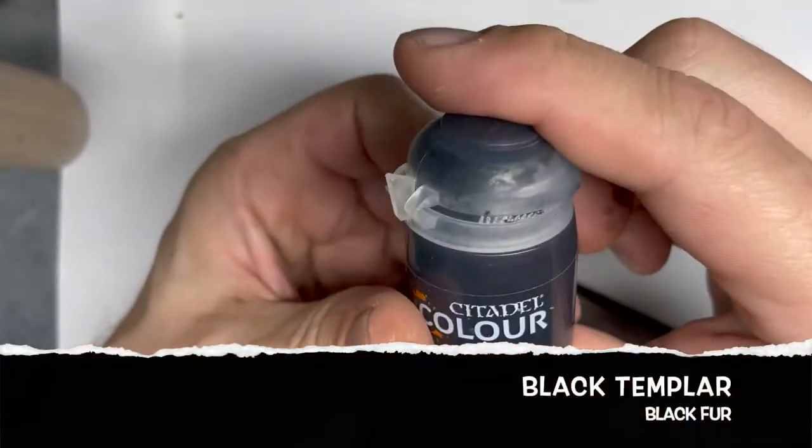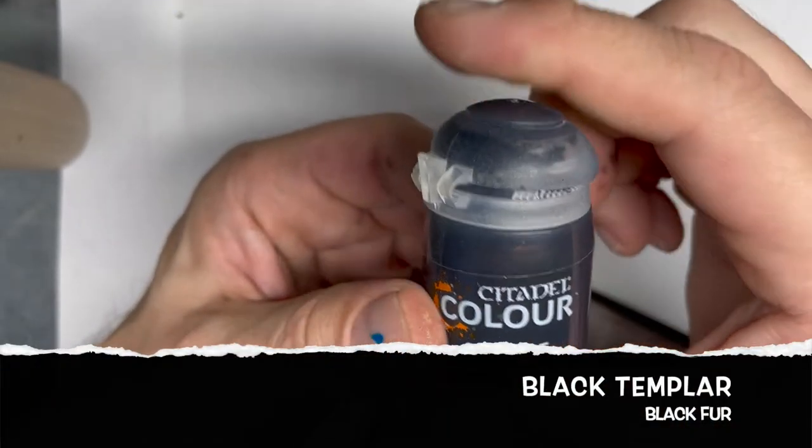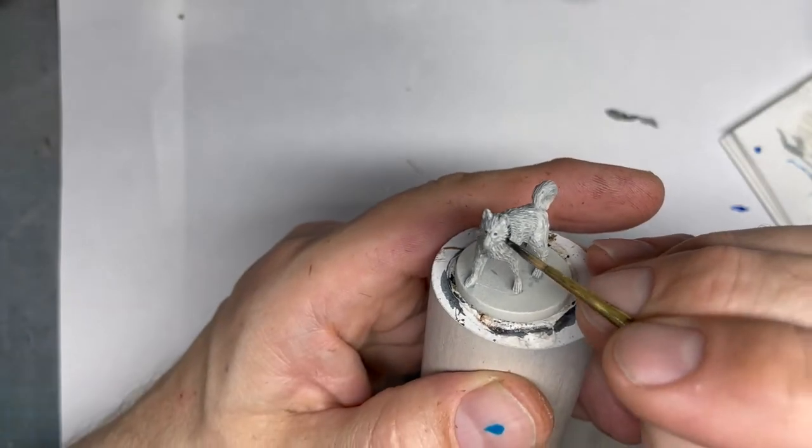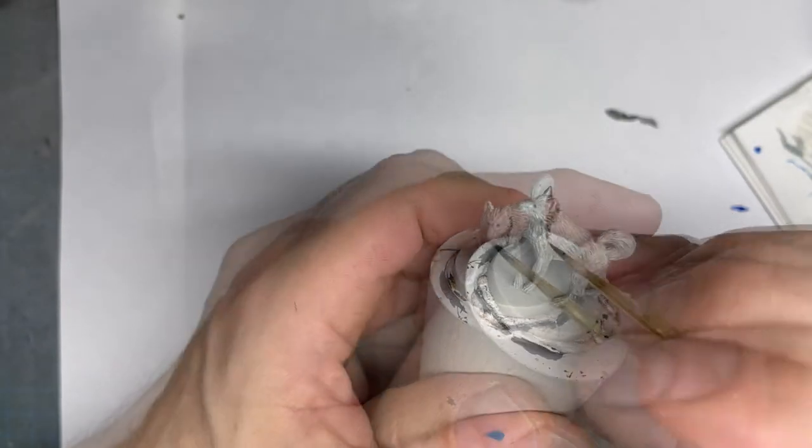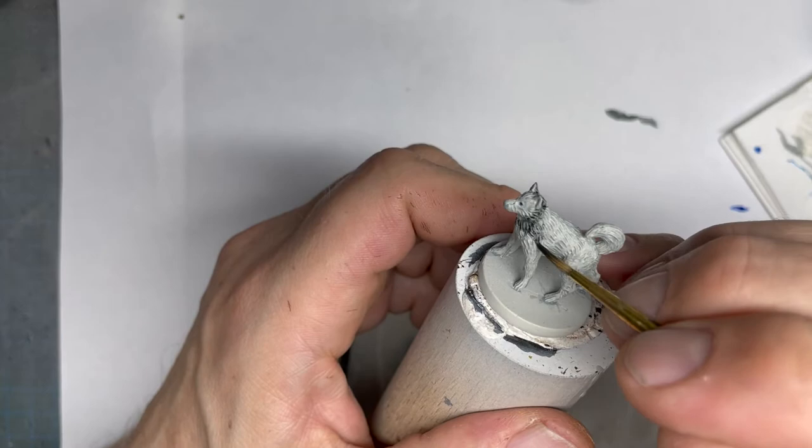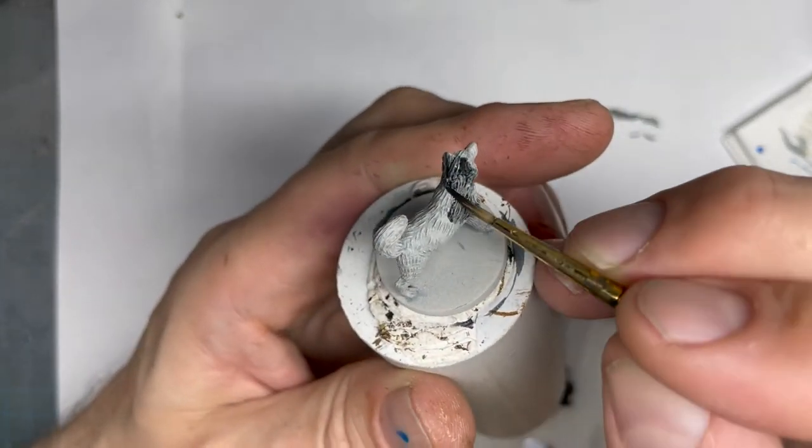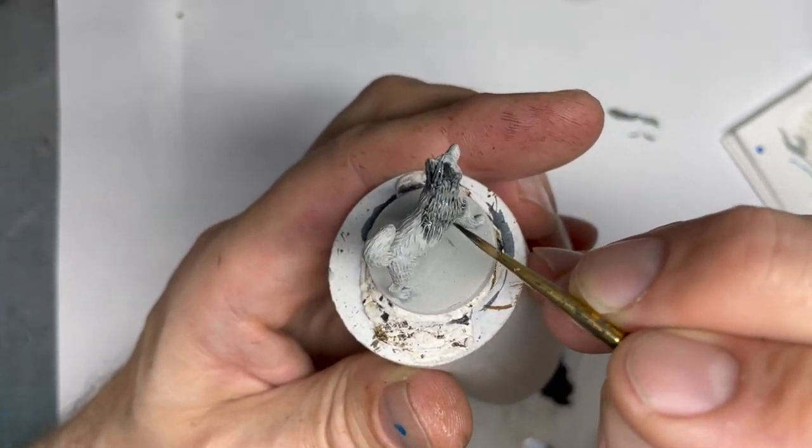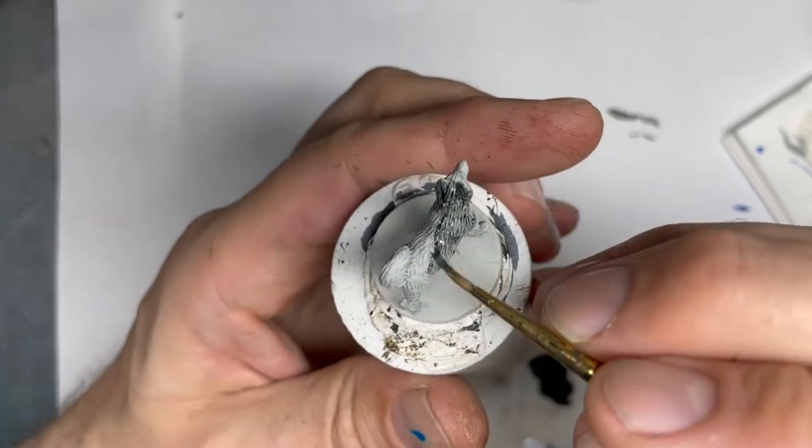Next up we got Black Templar for the black fur parts. I used a stippling motion to get the transitions from the normal fur to the black fur. Here you can check out some pictures online and choose whatever you want.